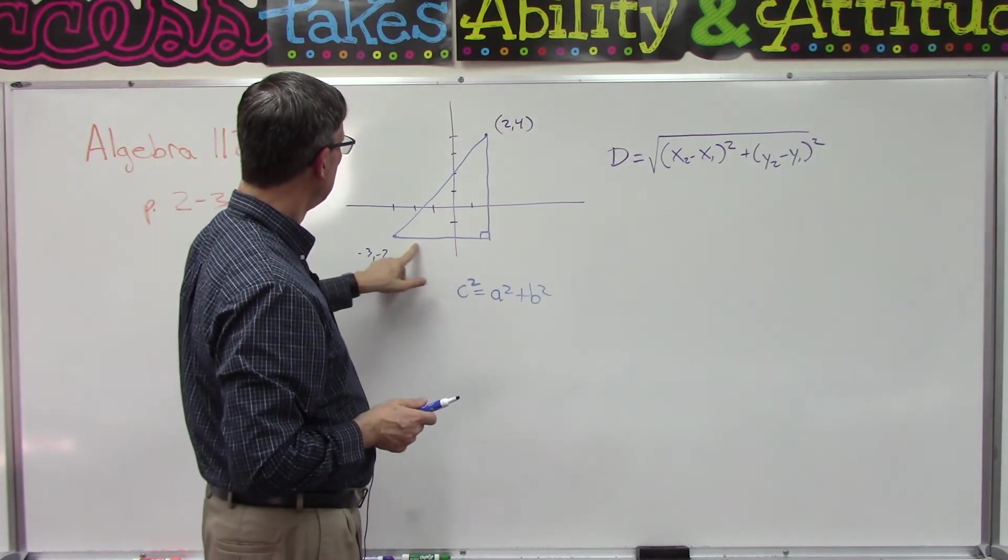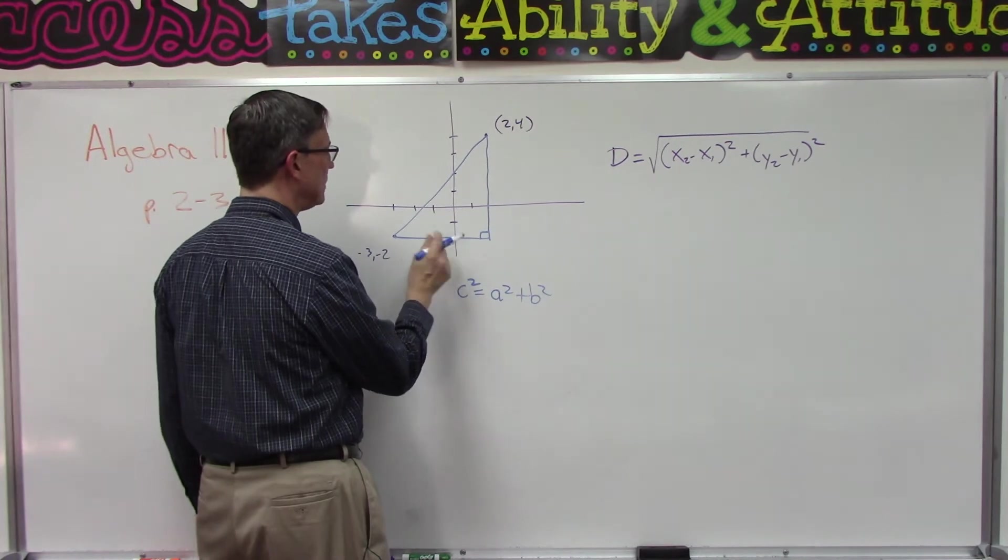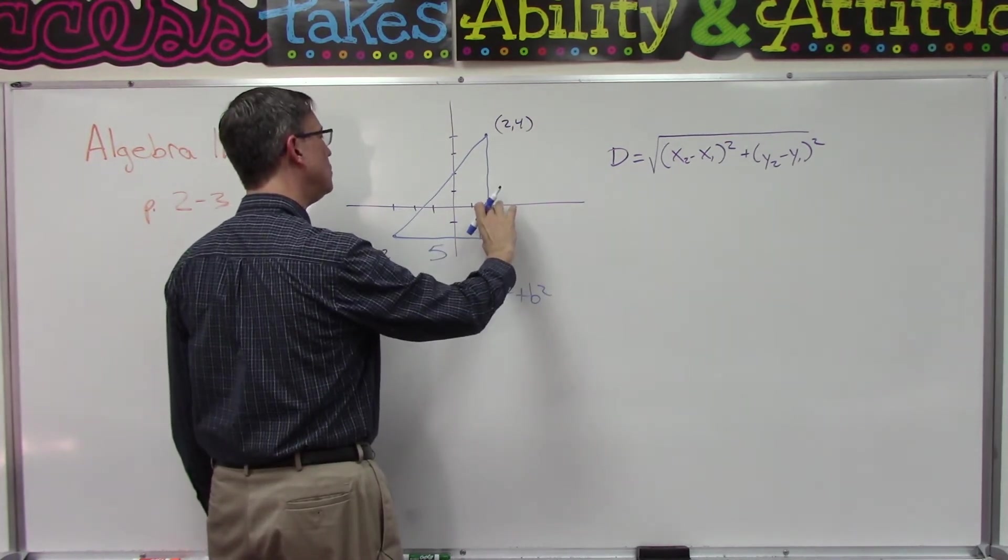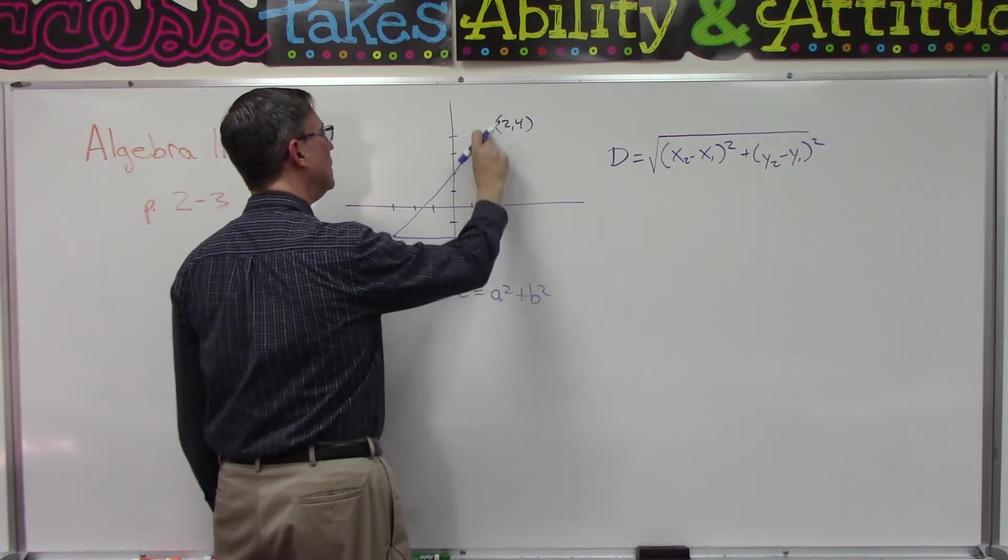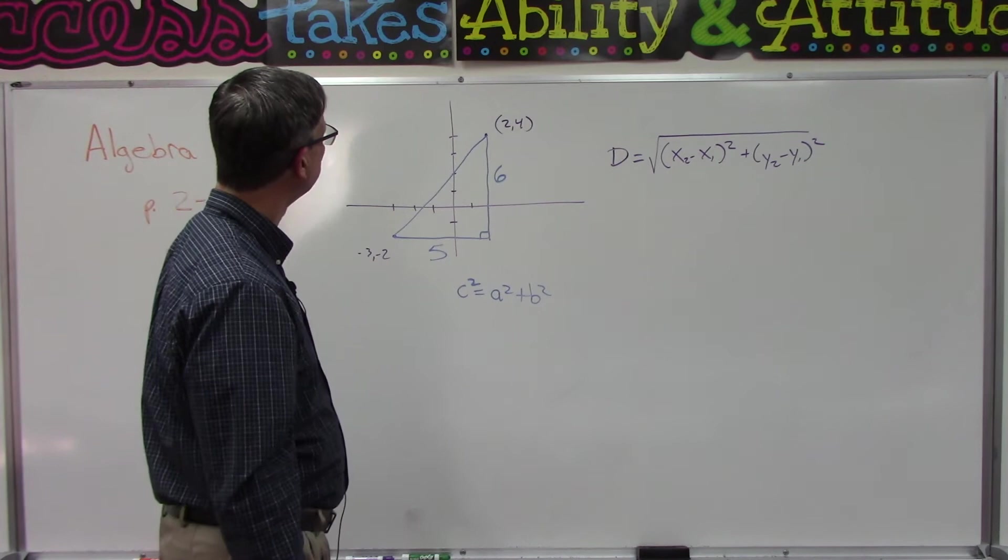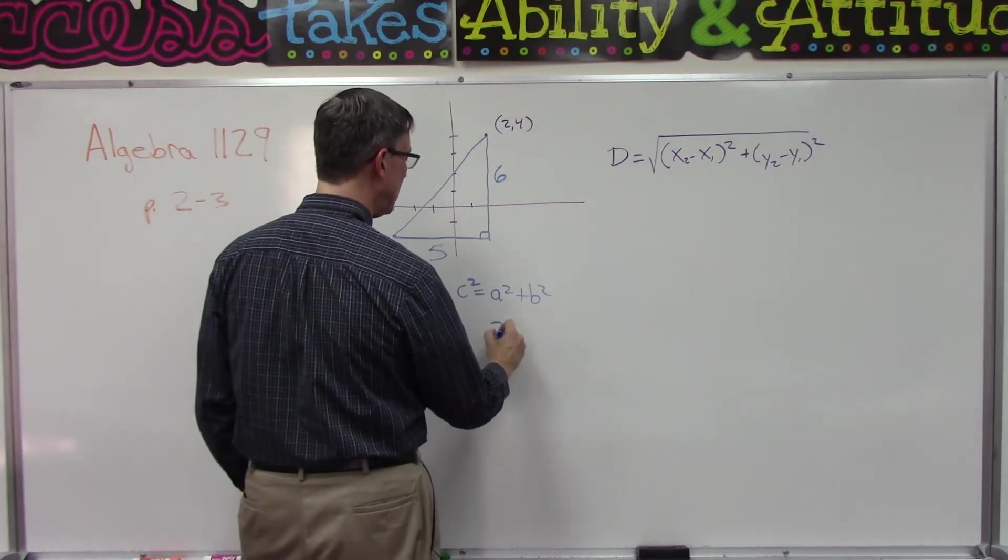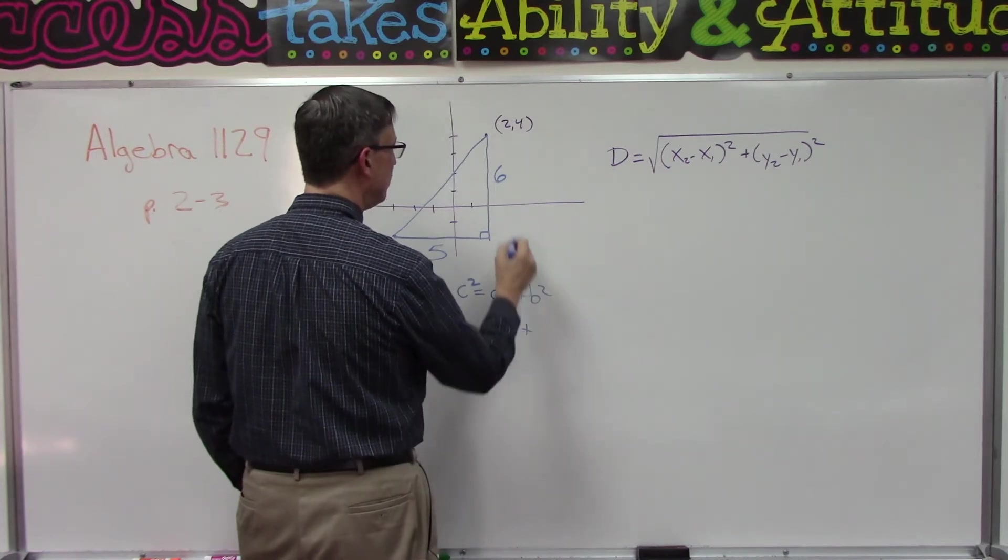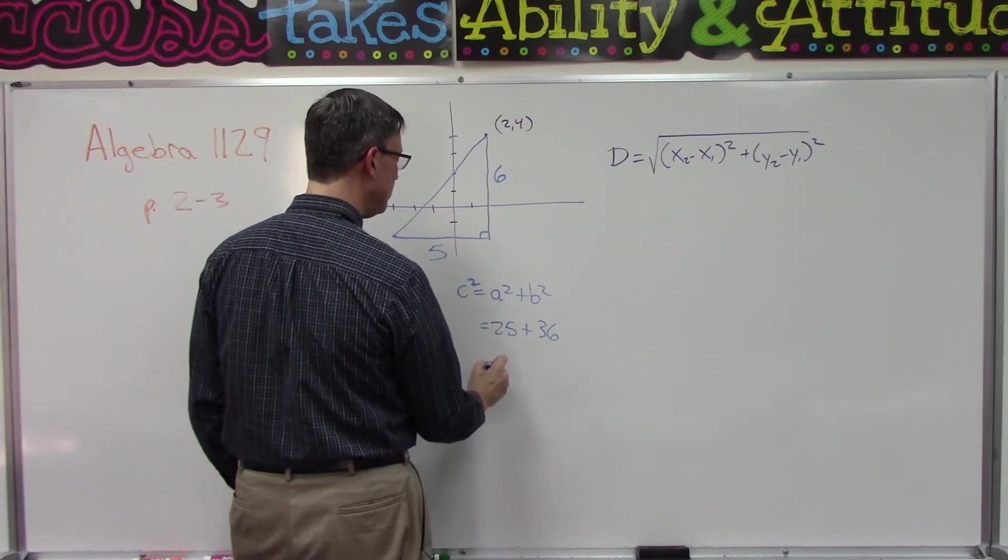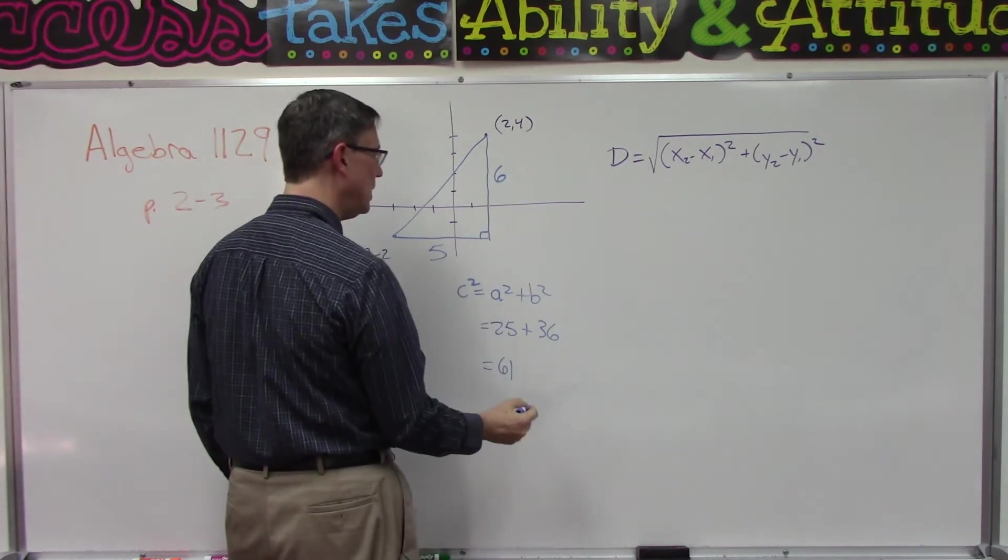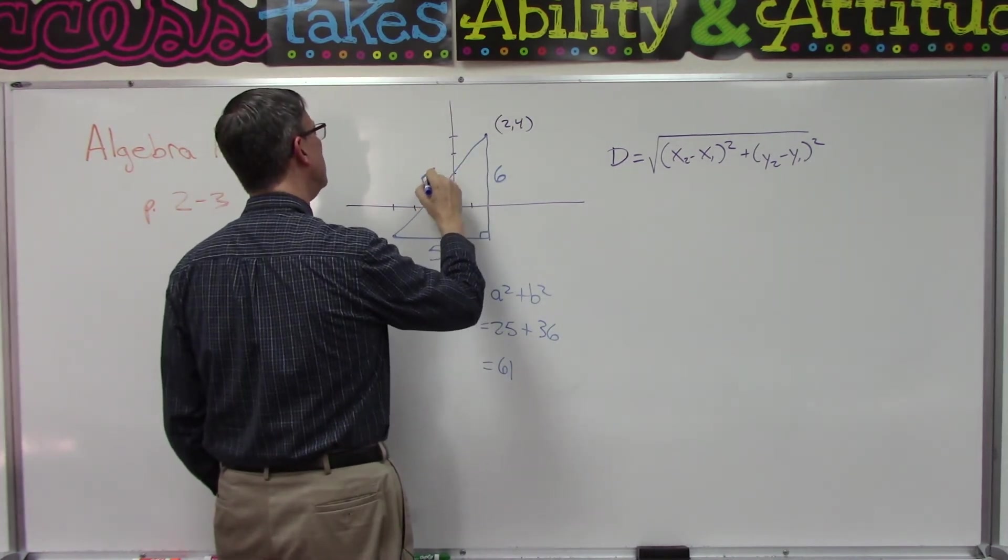So 3 plus 2 would be 5, so this length is 5, and then this is 2 plus 4 is 6. So that length is 6. To solve this, I would plug in and get 5 times 5 is 25 plus 6 times 6 is 36. Add those two numbers together and we get 61.